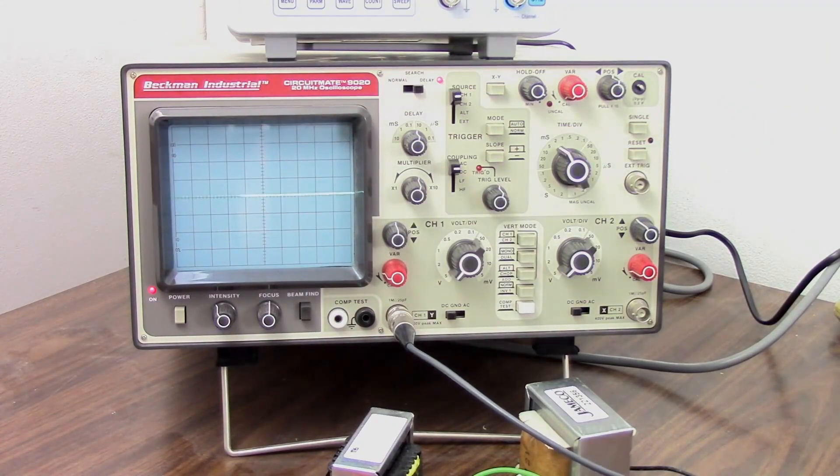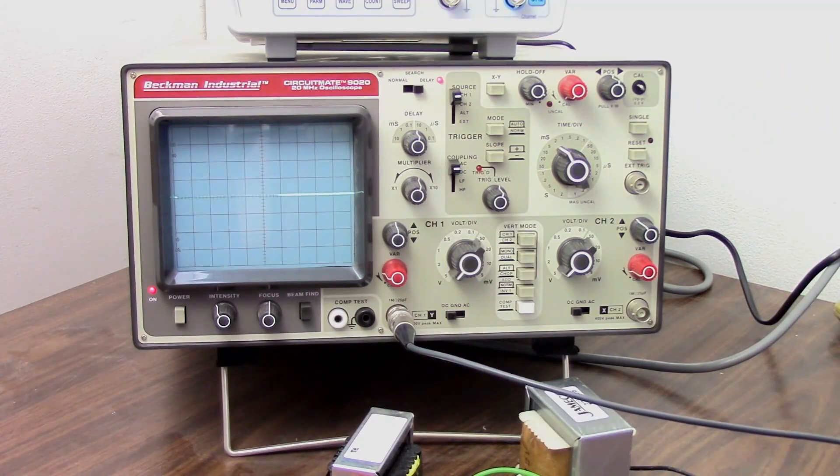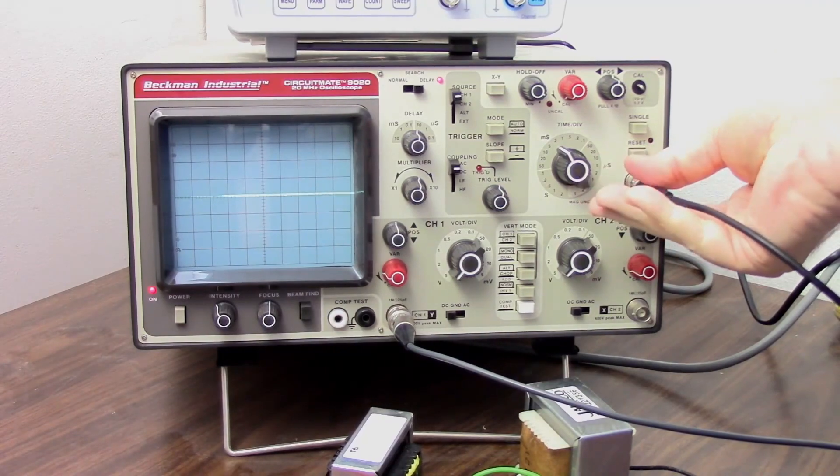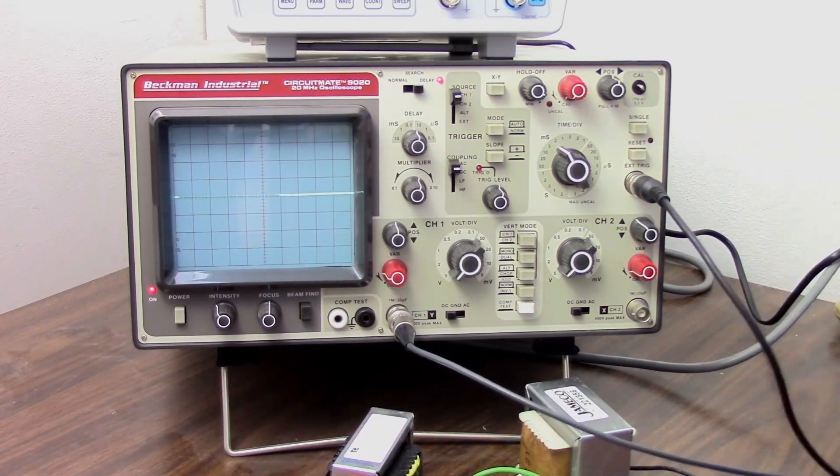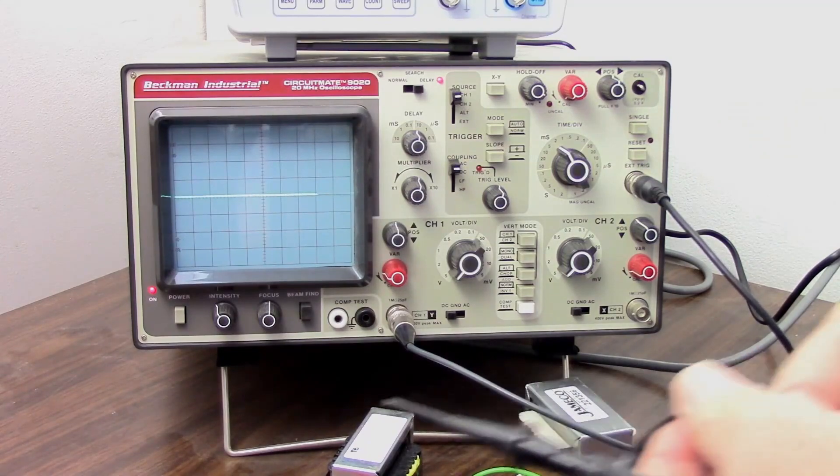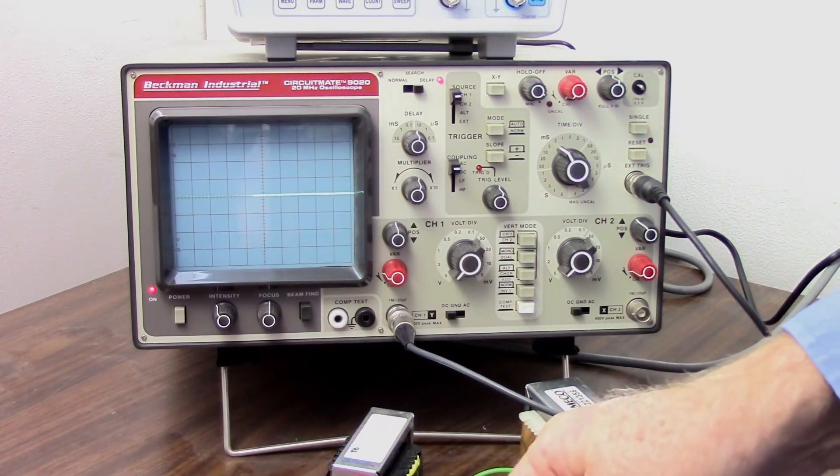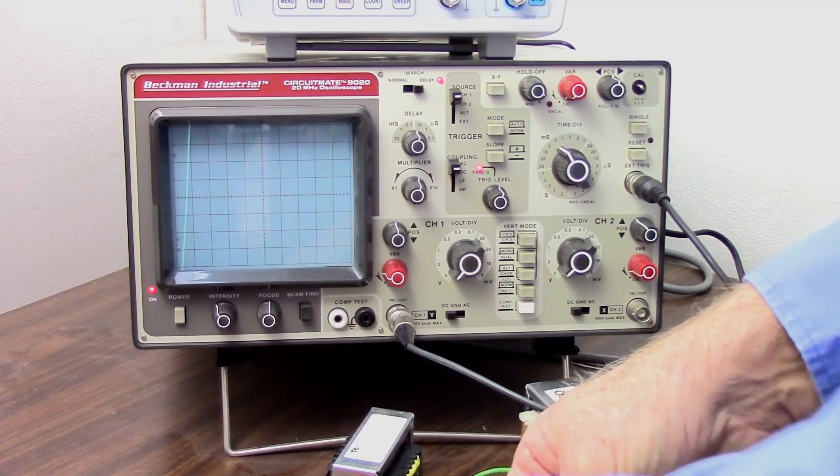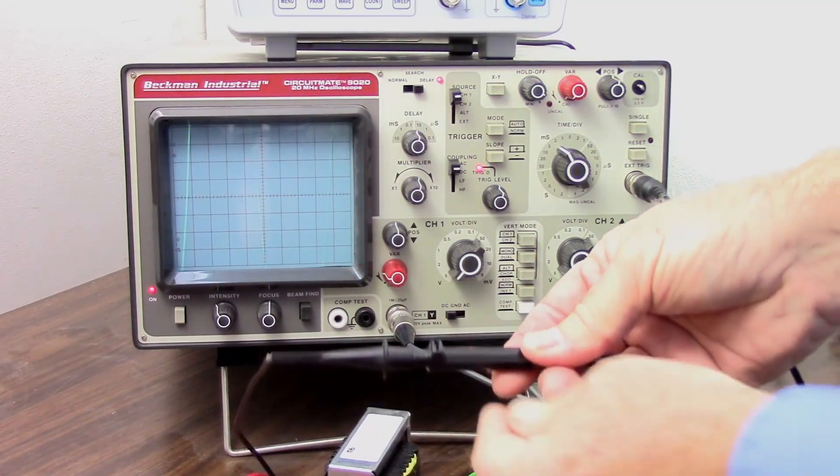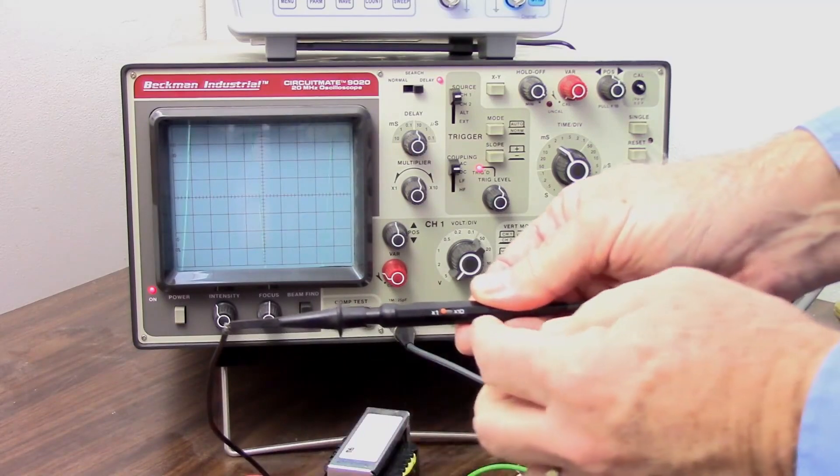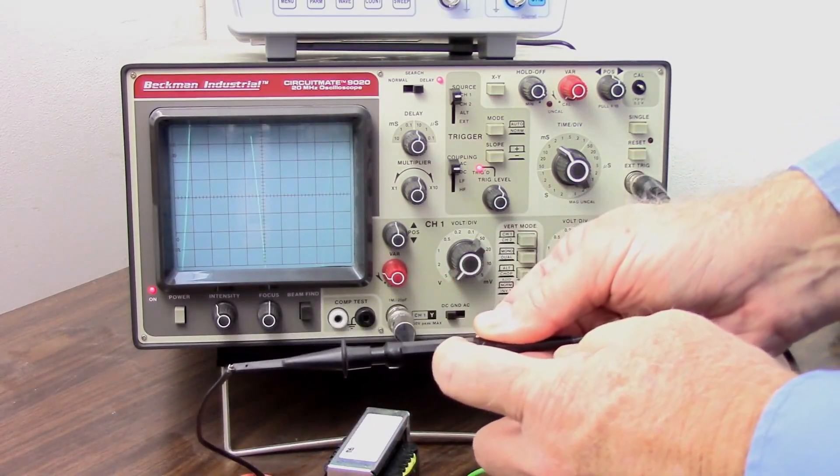Let's put this other probe here, and I'll ground it through the ground wire there. And now let's hook up the times ten probe. And we have the same thing. That's because the times ten probe, if you look carefully, has a switch on it. It says times one times ten.